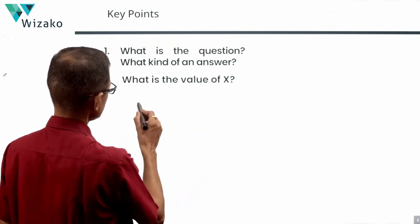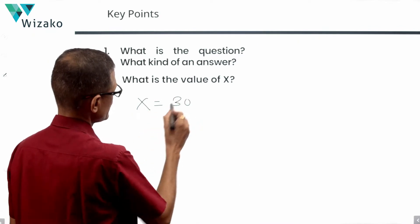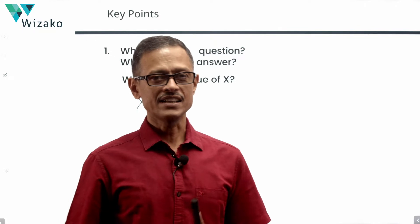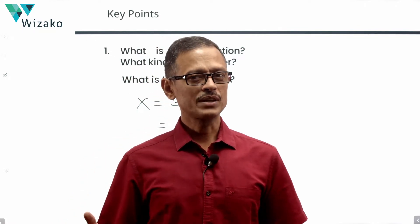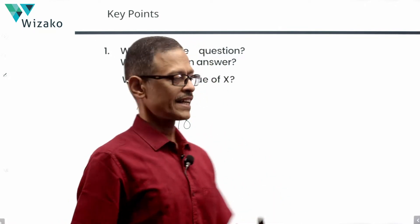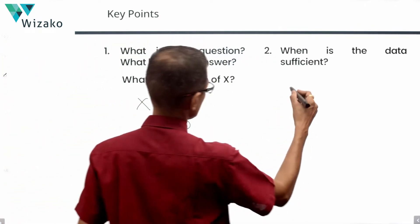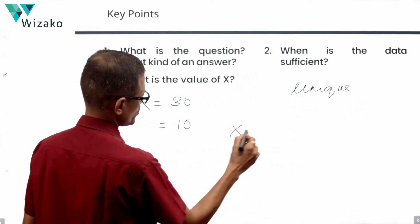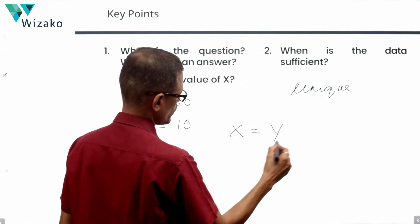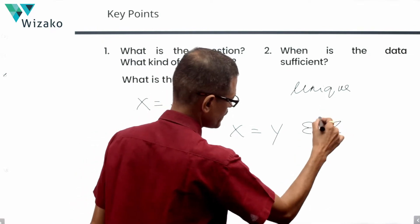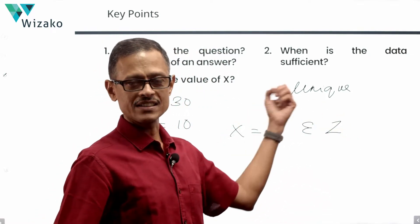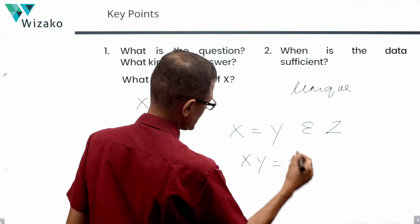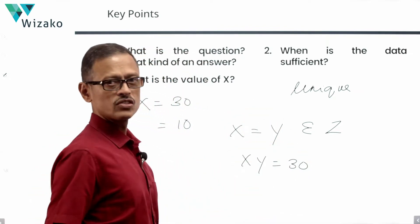We need to come up with a specific number for x, like x = 30 or x = 10. The data is sufficient only when we have a unique value. So let's establish the ground rules: x is not equal to y, both belong to the set of integers, and their product x·y = 30.